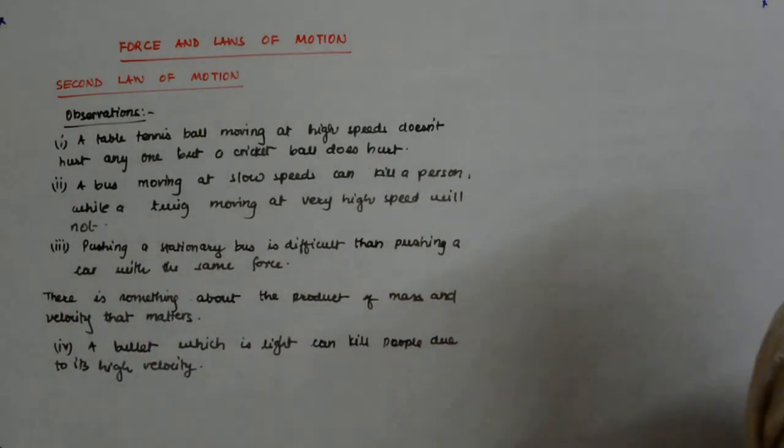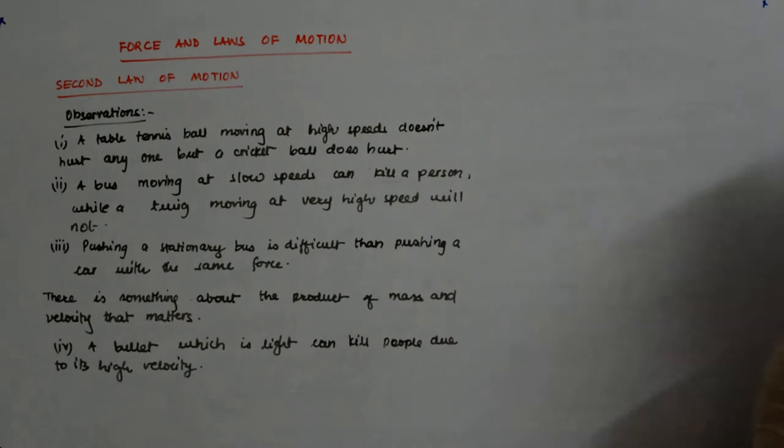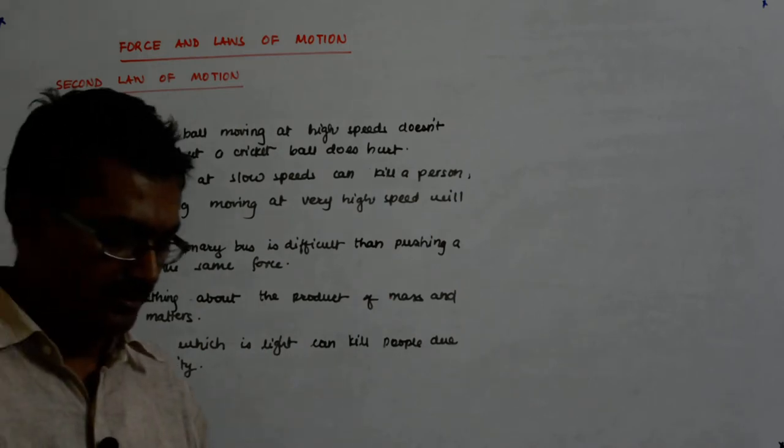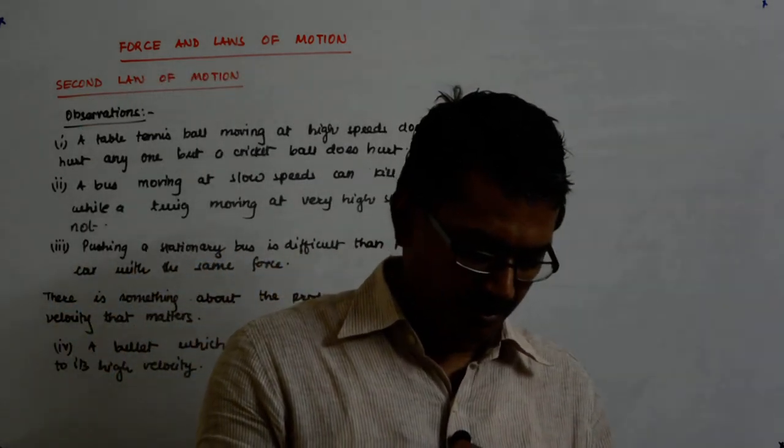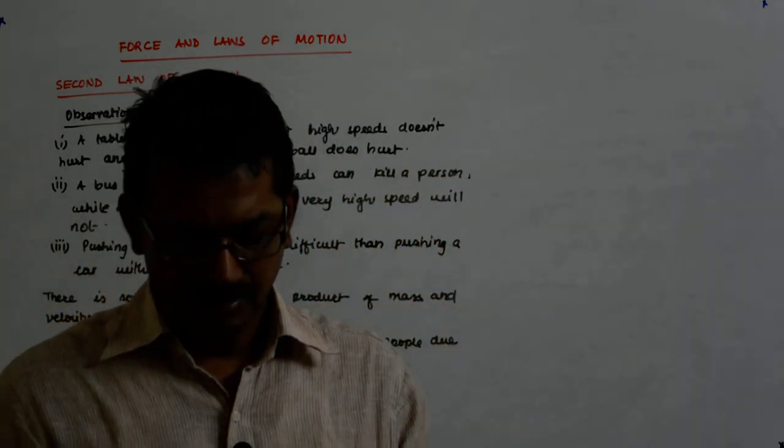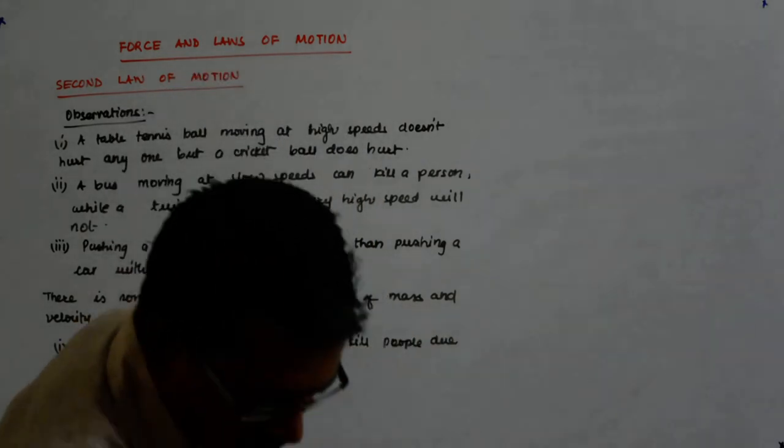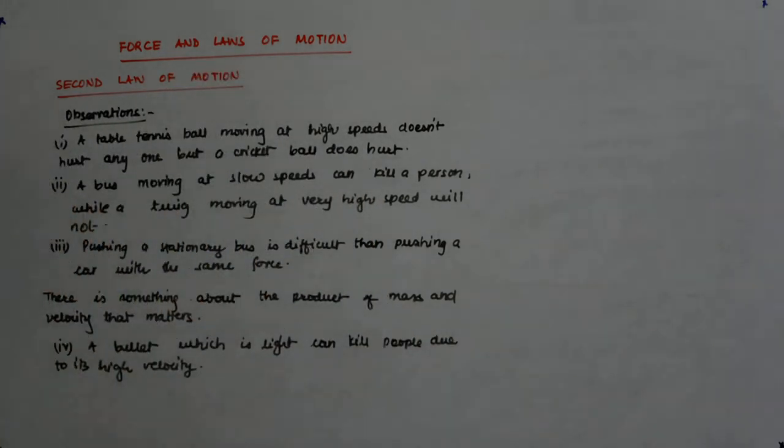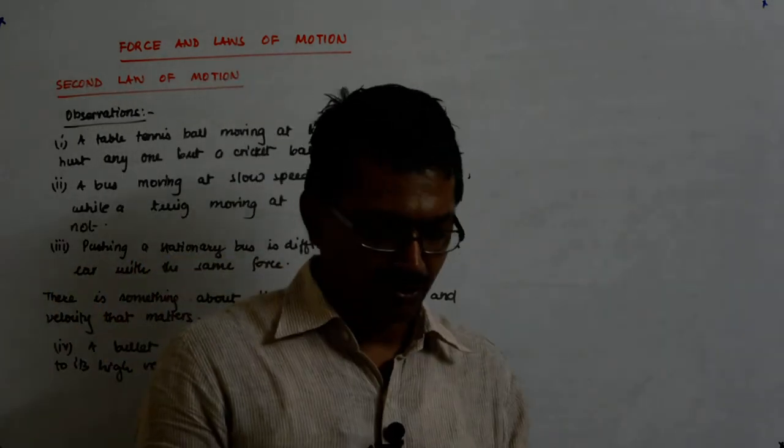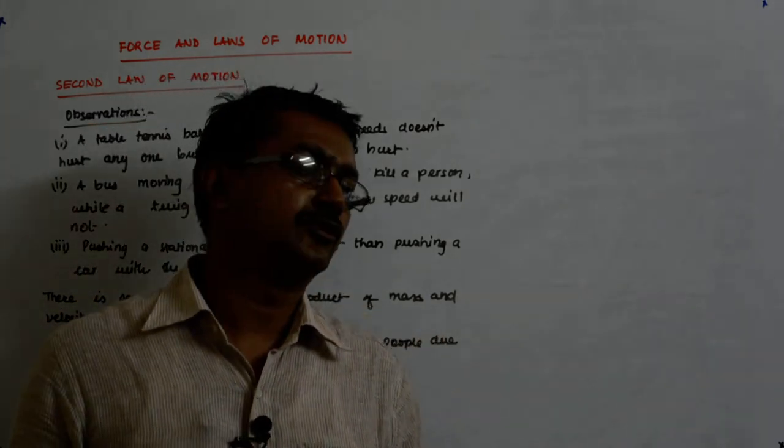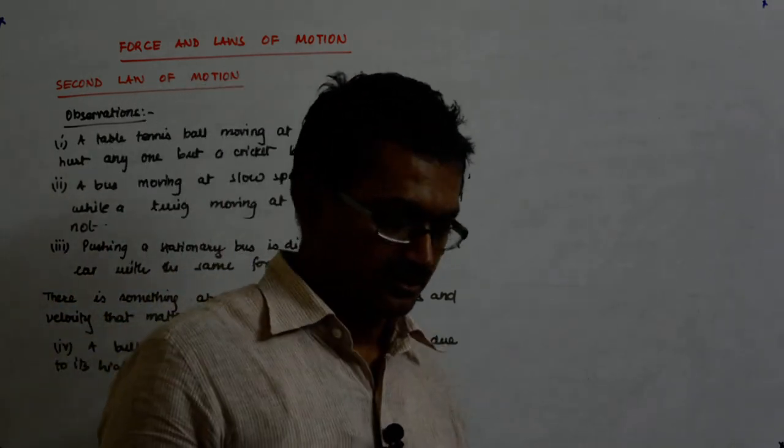Now we understand that there is something about the product of mass and velocity that matters. Hence we define a new term that is actually the product of mass and velocity. We call this new term momentum. This was a term coined by Newton for the first time when he proceeded to define his second law.